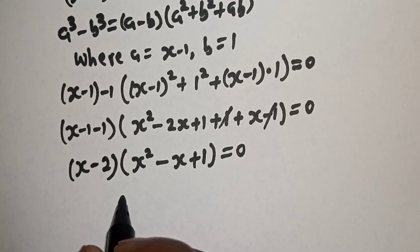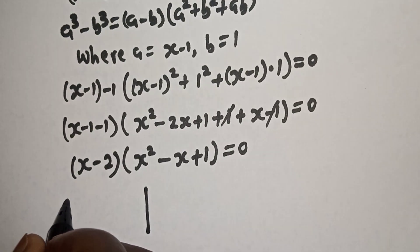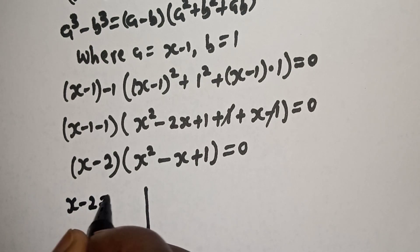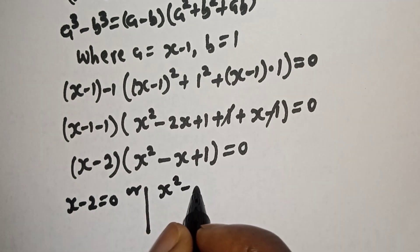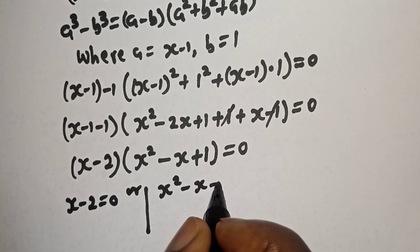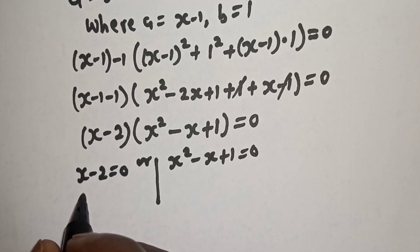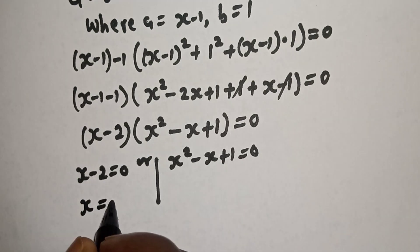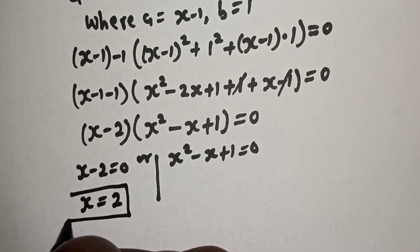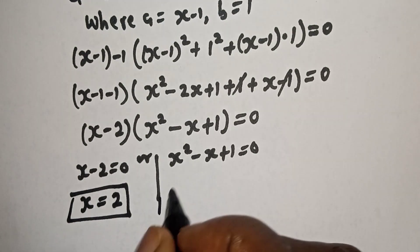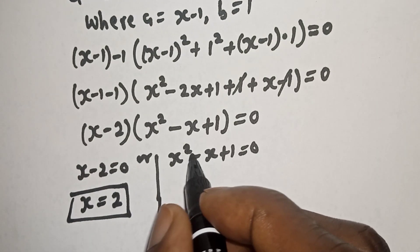There are two cases here. The first case is S minus 2 equal to 0, or S squared minus S plus 1 is equal to 0. From the first case, S is equal to 2.